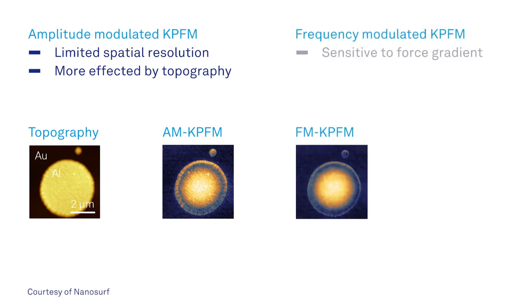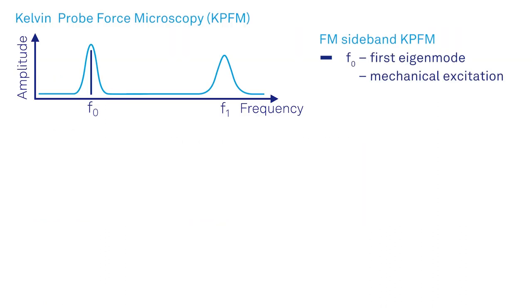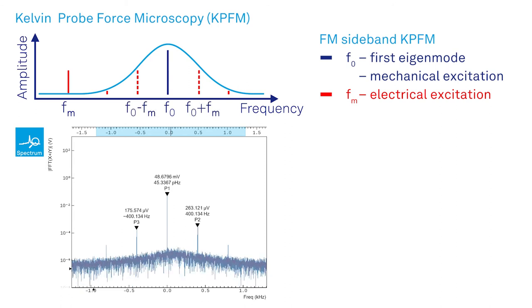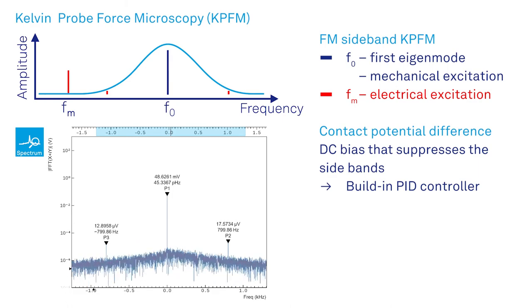They are sensitive to the force gradient and require phase-sensitive detection of the mechanical and electrical drive. For FM sideband KPFM in particular, the electrical excitation happens at a lower frequency FM and we recover the information of interest by analyzing the resulting sidebands F0 plus minus FM. For this method, the PID controller determines the DC bias voltage necessary to suppress these sidebands.